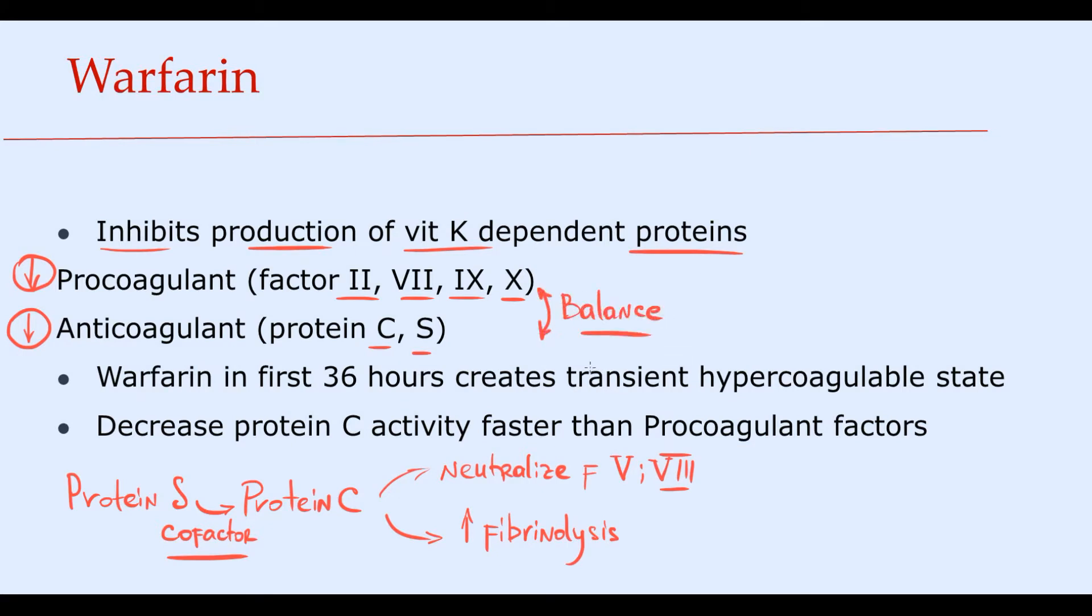And for now we certainly know that warfarin in the first 36 hours creates a transient hypercoagulable state that significantly increases the risk of various thrombotic complications. The reason why warfarin creates this transient hypercoagulable state is that warfarin causes decreasing protein C activity faster than it decreases the activity of procoagulant factors.